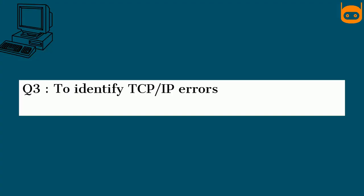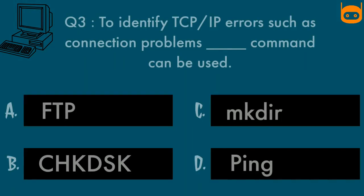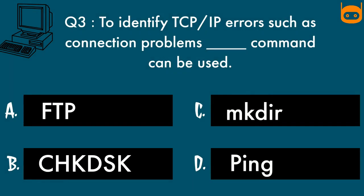Our third question is: To identify TCP/IP errors such as connection problems, which DASH command can be used? Options are: Option A, FTP. Option B, Jackdisk. Option C, Mkdir. Option D, Ping.